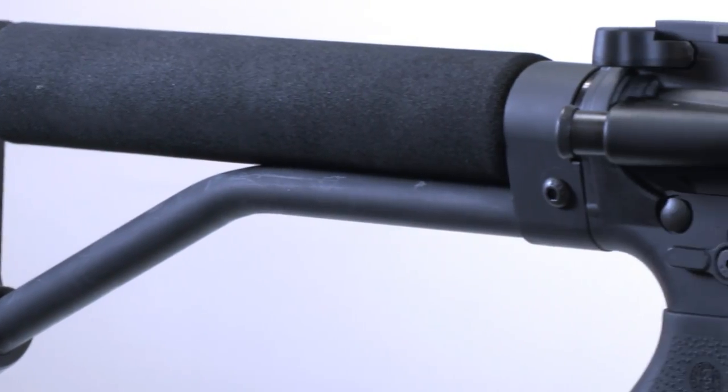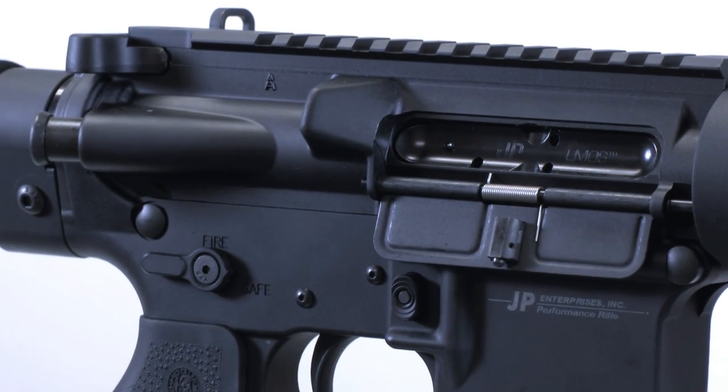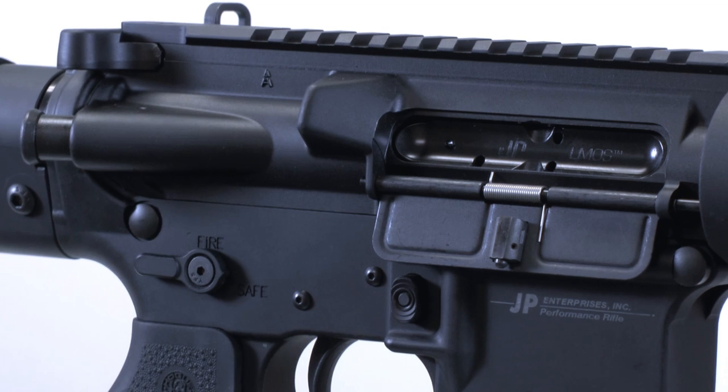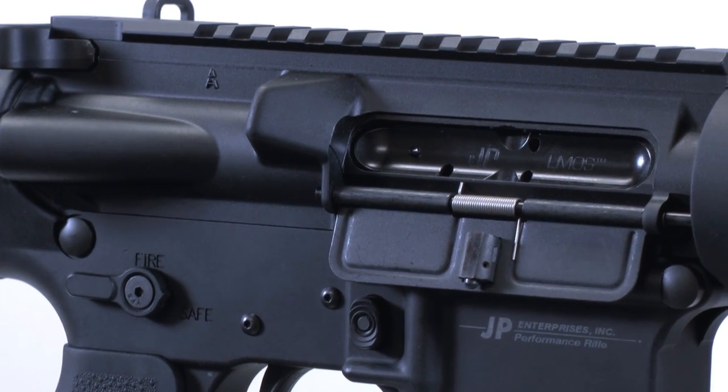At this point, because of slightly different tolerances in buffer tubes, bolt carriers, and receivers, you might find that there is a small gap between the bolt carrier and the SCS. If so, a slight shim is all that's required.